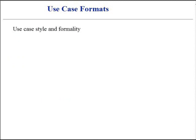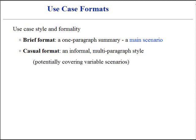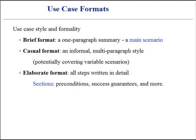Use cases can be written in varying degrees of formality. The brief format conveys a terse, one-paragraph summary — usually the summary of the main success scenario. Casual means informal, multiple-paragraph format, where multiple paragraphs can cover variable scenarios in the system. Elaborate use cases have all steps and variations written in detail, with supporting sections such as preconditions and success guarantees.